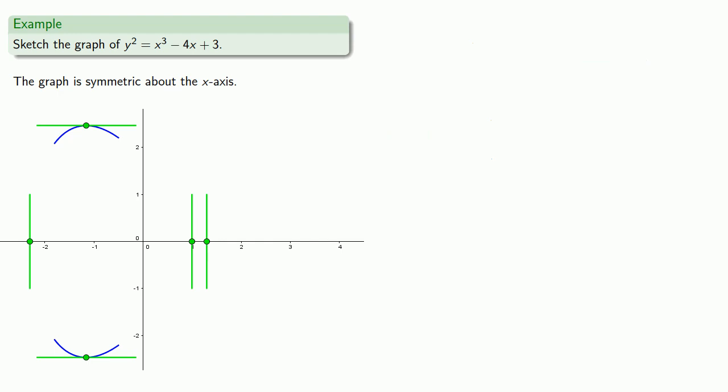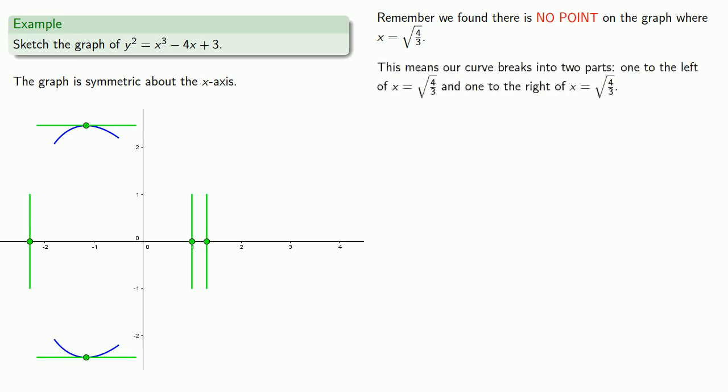There's one other feature from our analysis of the critical points. When we tried to find the point where x = √(4/3), we found the equation had no solutions. This means there is no point on the graph where x = √(4/3). The curve must break into two parts: one to the left of x = √(4/3) and one to the right. We'll put in a barrier line there, a do not cross indicator. This vertical line doesn't imply a vertical asymptote; it just indicates there's a break in the graph, a discontinuity.